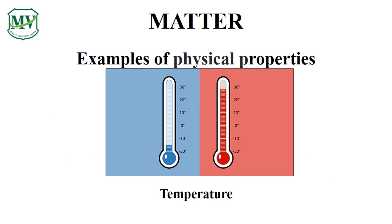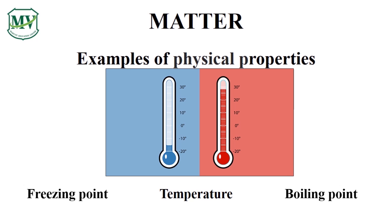Matter changes its physical properties due to temperature. Freezing point and boiling point are physical properties of matter affected by temperature. So when you put some water into a plastic cup and place it in the freezer, after some time the water changes into ice. The water changes from a liquid to a solid state, and with a bit of heat energy, the ice will melt back into water. Note that the chemical composition of water — hydrogen and oxygen — did not change, but its state changed from liquid to ice and back to liquid.